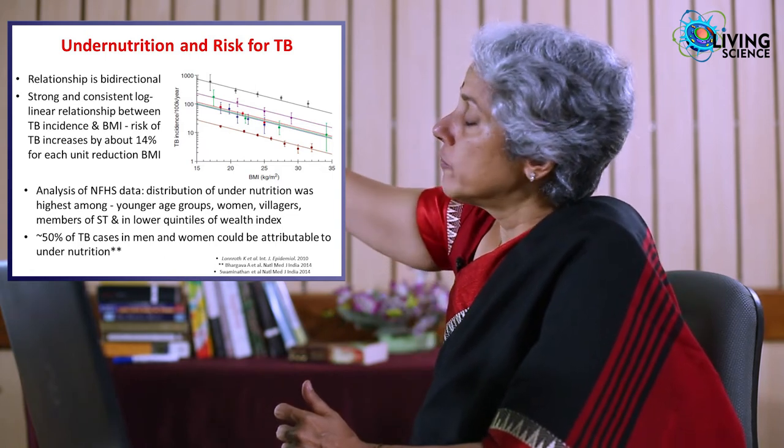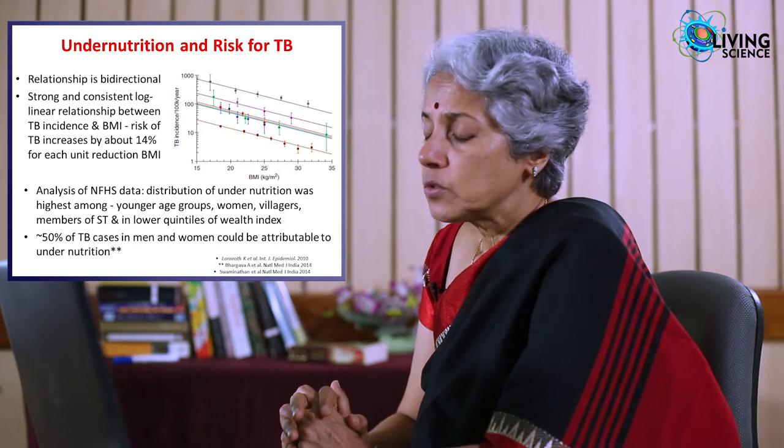For India, it is really under-nutrition that is the biggest risk factor. There is a clear inverse correlation between lower BMI and higher TB incidence. Analysis of the NFHS data by Anurag Bhargava and colleagues found that about 50 percent of cases in India could be attributable to under-nutrition. HIV confers a very high risk because it suppresses the immune system, but HIV prevalence in our population is very low, so when you multiply the two figures the contribution is smaller. Under-nutrition affects 30–40 percent of our population, making its population attributable fraction very large.